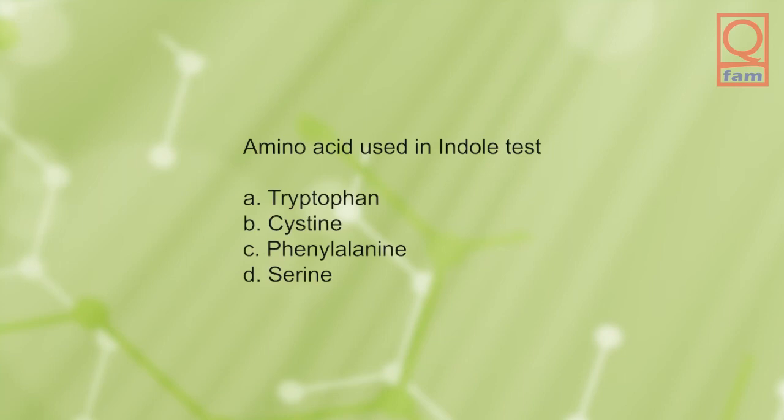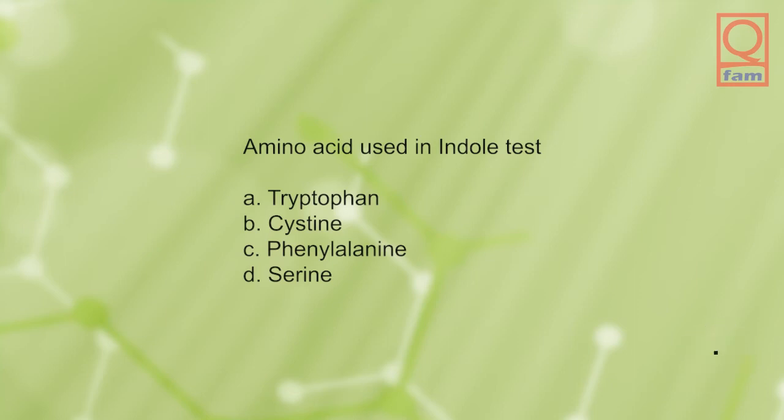Amino acid used in indole test: A) tryptophan, B) cysteine, C) phenylalanine, D) serine. The answer is A, tryptophan.